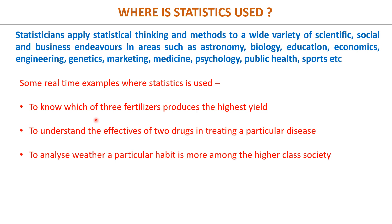For example, suppose I want to know which fertilizer produces the highest yield, or which of two drugs is more effective in treating a particular disease, or whether a particular habit like smoking is more prevalent among affluent students or among all students. To make such inferences, I have to use a statistical tool. It is not something I can decide arbitrarily. Statistical techniques help us recognize and infer results based on real-time situations.